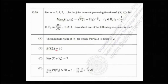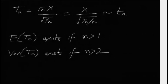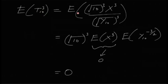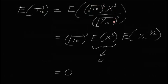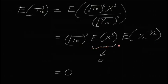Option B claims E[T₁₀³] = 10. Writing it out: E[T₁₀³] = (√10)³ · E[X³] · E[Y₁₀^(−3/2)]. Since X ~ N(0,1), all odd central moments are zero, so E[X³] = 0, making the entire expression zero. Option B is also false.